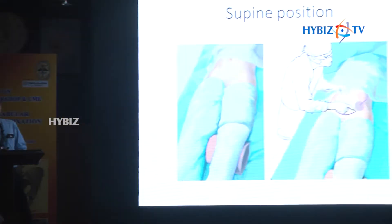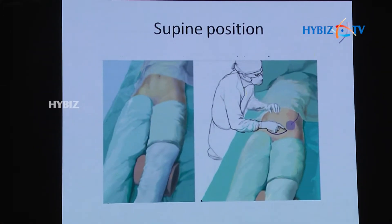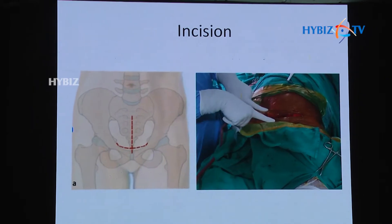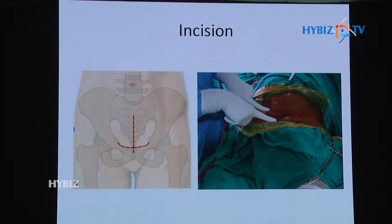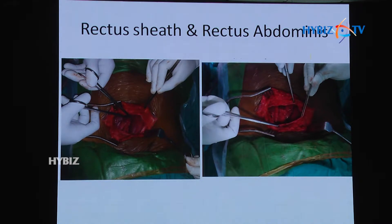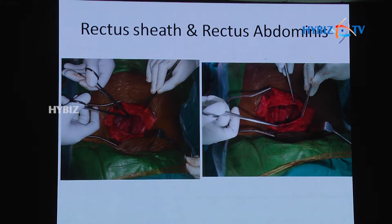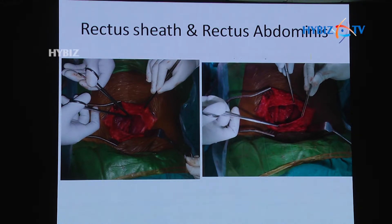In Stopa's approach, the patient is placed in the supine position with a roll below the knee on the operative side — this is very important to relax the anterior neurovascular bundle during dissection. The surgeon stands on the opposite side of the fracture. The incision is a Pfannenstiel-type incision placed two centimeters above the pubic symphysis. The skin and subcutaneous tissue are dissected, the anterior rectus sheath is retracted, and the rectus abdominis muscles are visualized.